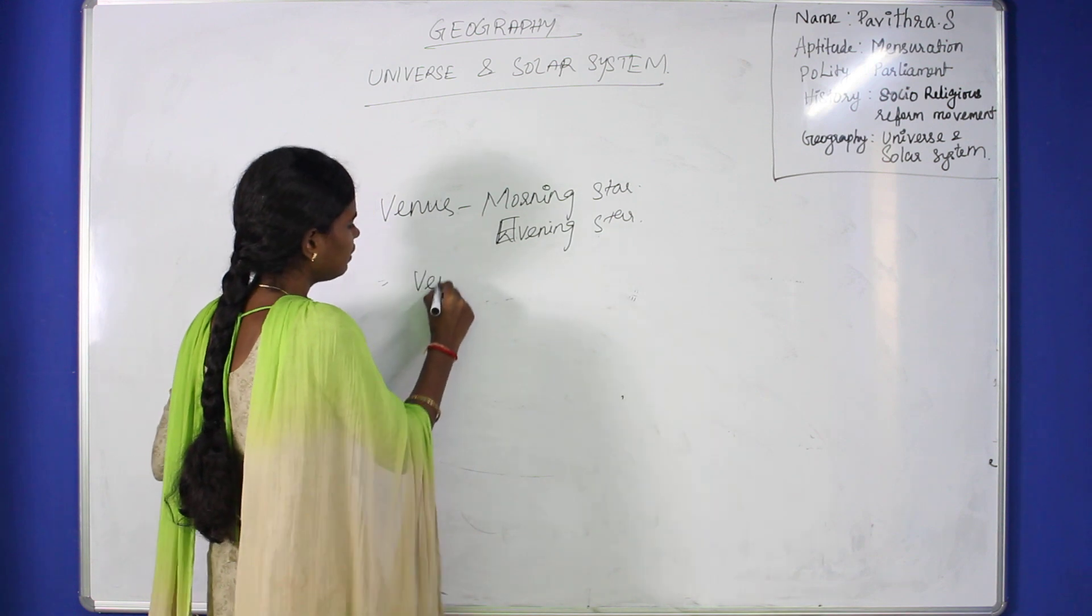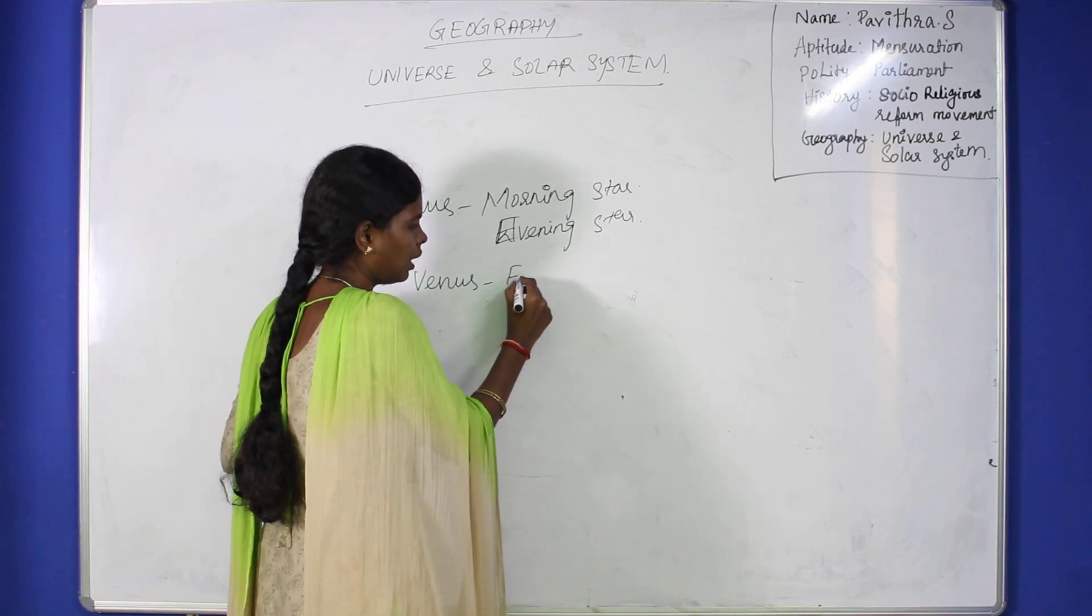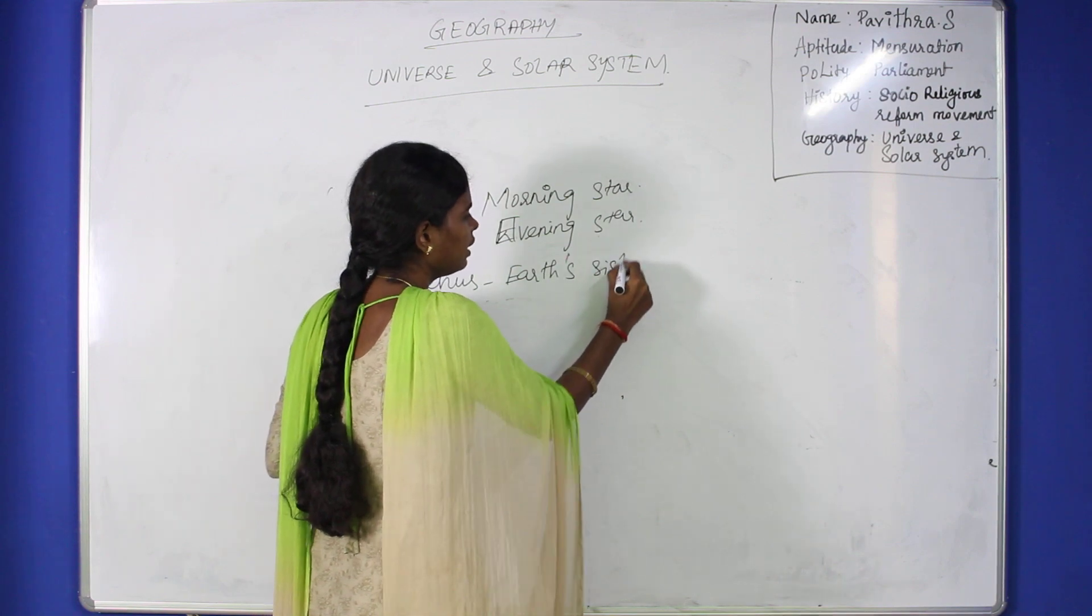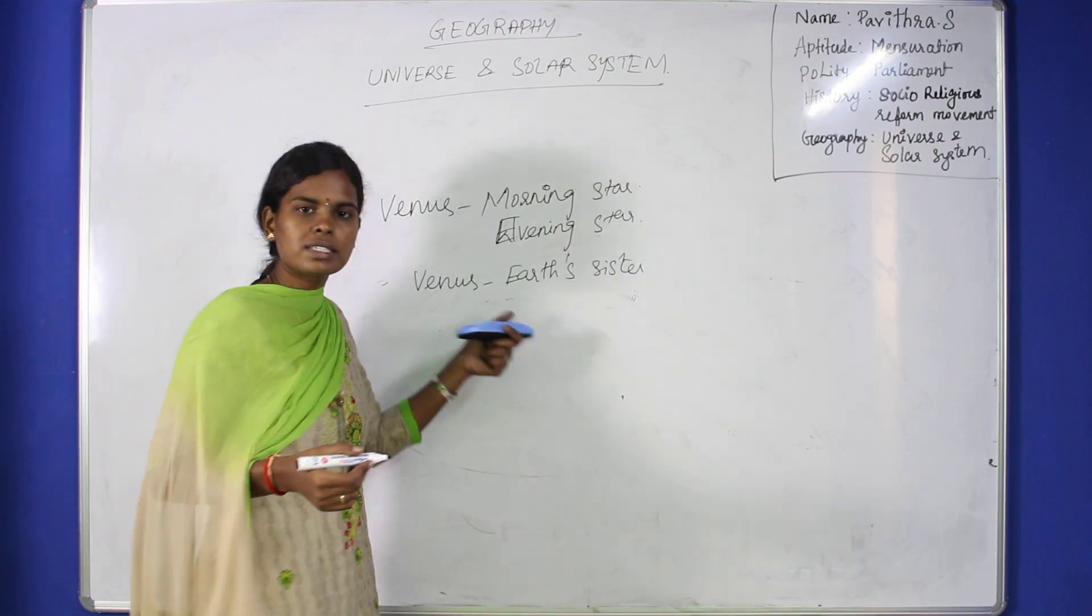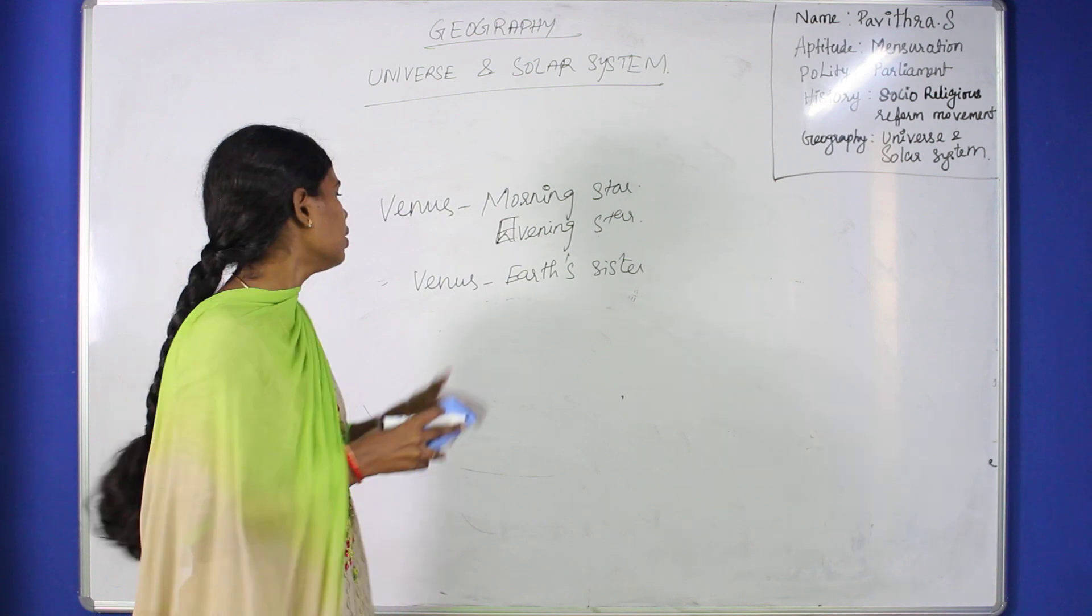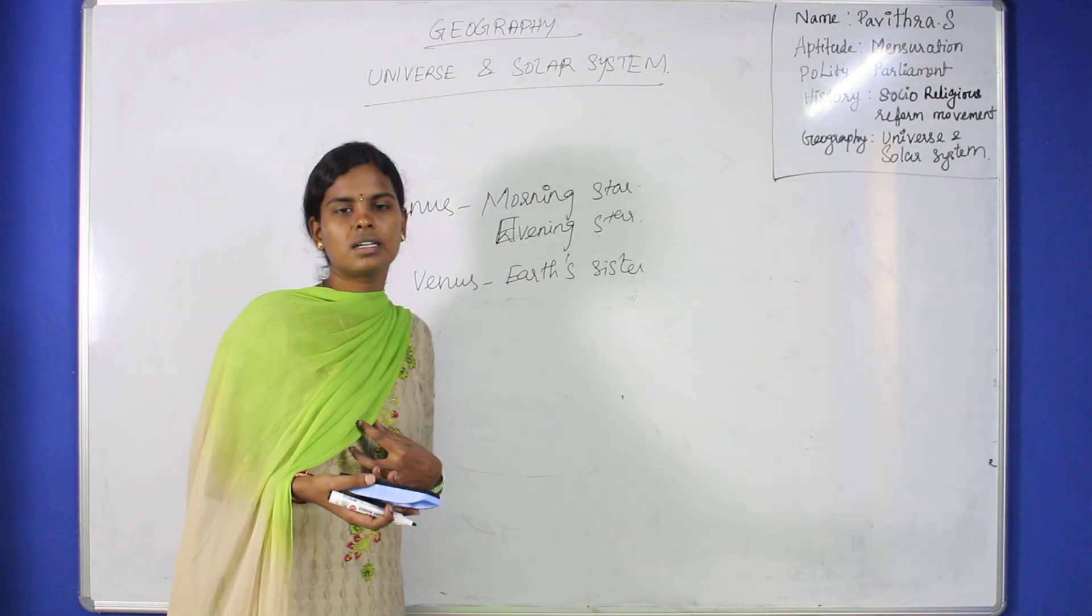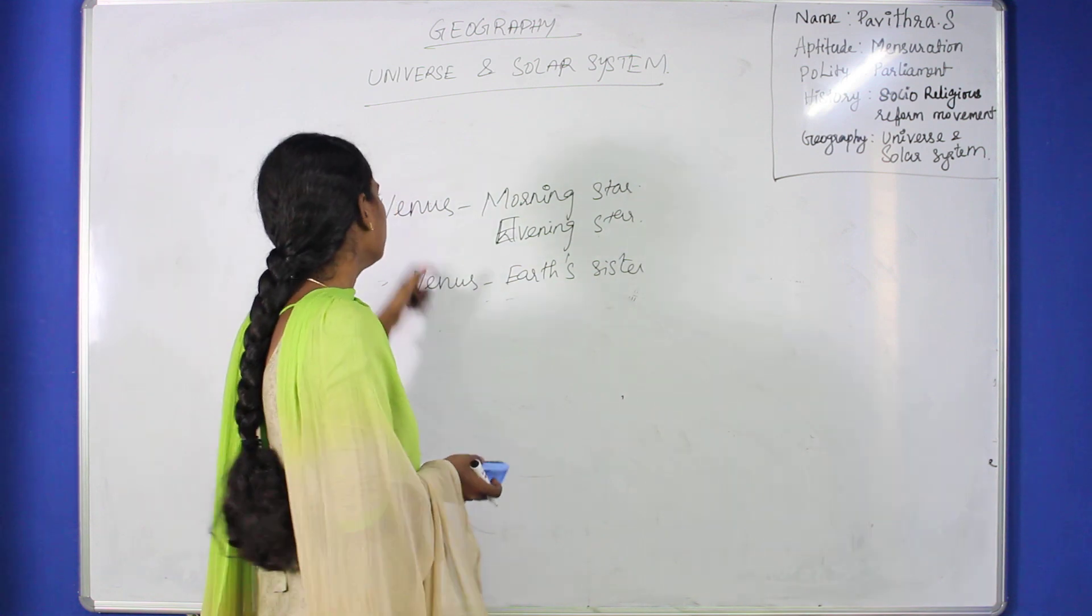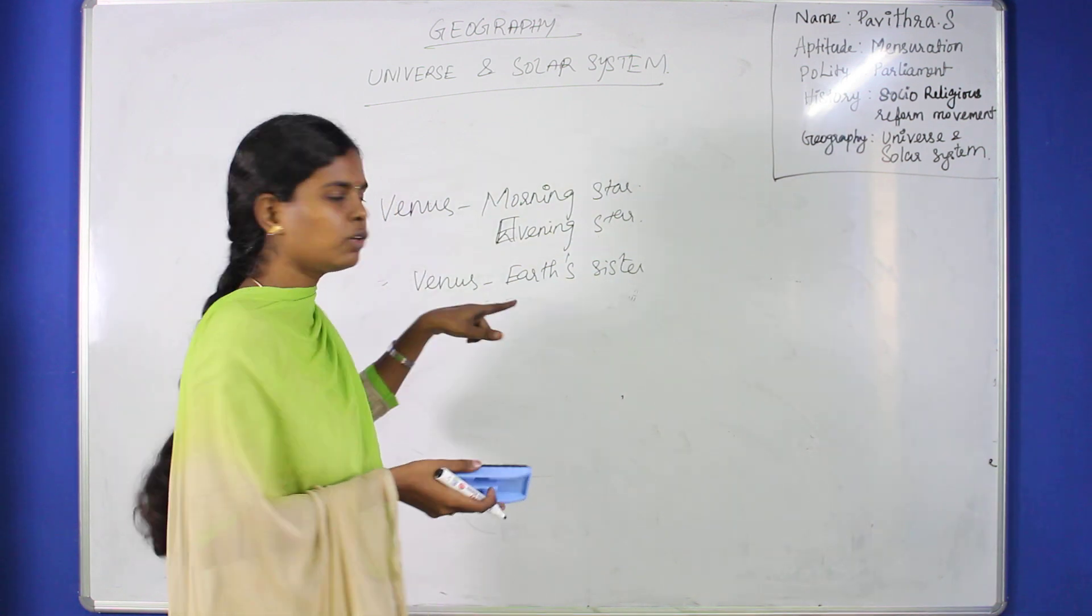Venus is called Earth's sister planet. Why? Venus has similar size and density to Earth, more or less Earth's size and density. That's why Venus is called Earth's sister. Venus has another unique feature.